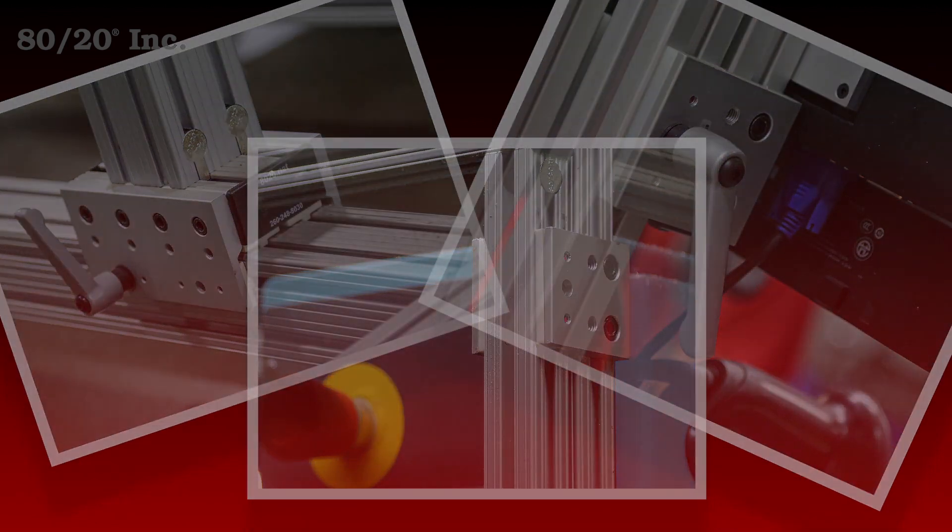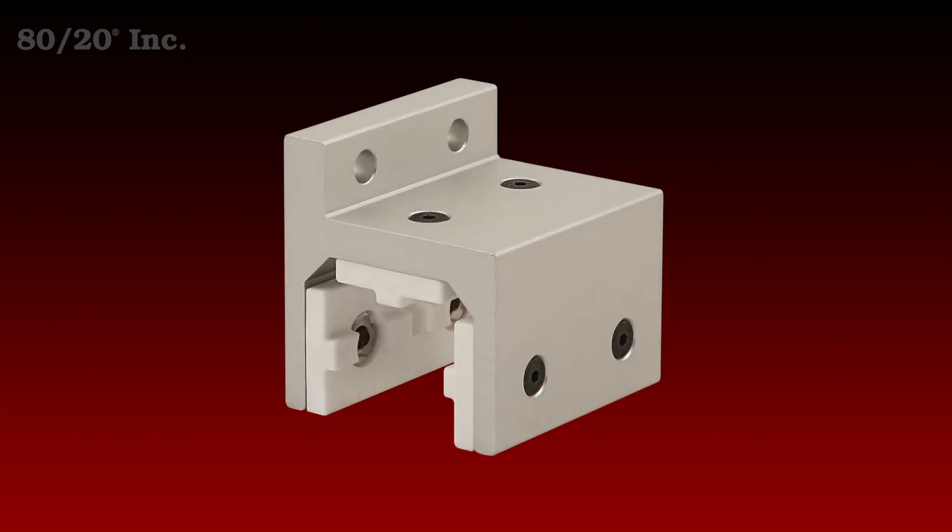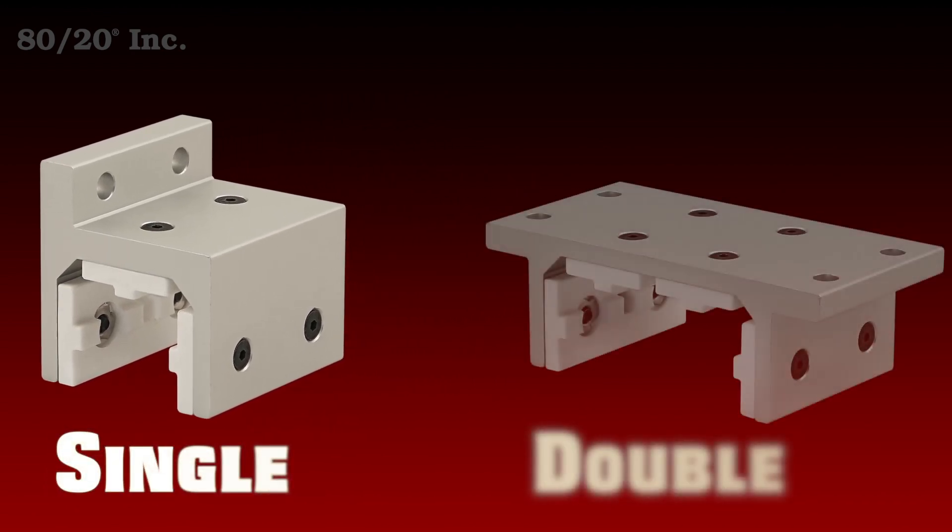The first type of linear motion component we want to talk about is our flange style. These come pre-assembled with extra shims. They're available in both single and double style.